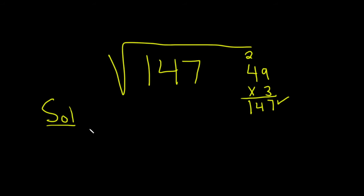We can take 147 and we can break it up. This is the square root of 49 times 3.